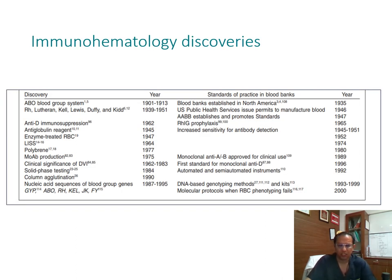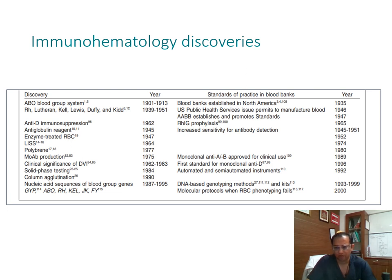These are the immunohematology discoveries which have happened right from the ABO blood group system, discovered in 1901, after which Rh, Lutheran, Kell, Lewis, Duffy, and Kidd were discovered in the 1950s — all the way down to DNA-based genotyping methods where molecular protocols and RBC phenotyping is applied. This happened around 2000, and it is high time we start implementing and using it for the patient's benefit.